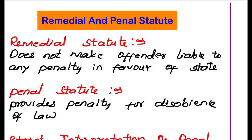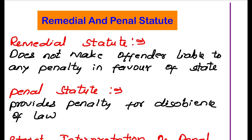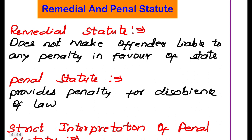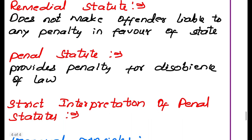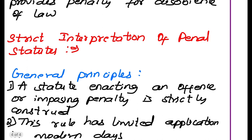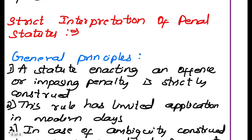Next: remedial and penal statutes. A remedial statute does not make an offender liable to any penalty in favor of the state. A penal statute is the opposite — it provides penalty for disobedience of law. General principle: a statute enacting an offense or imposing a penalty is strictly construed, meaning the law must be read as it is, with no logical explanation implied.